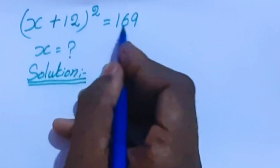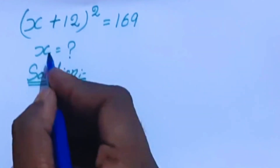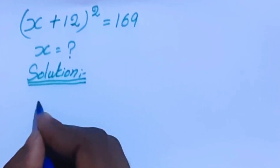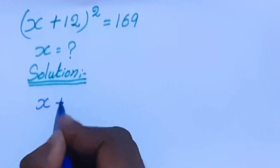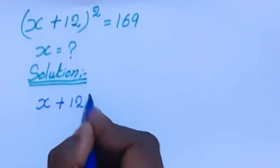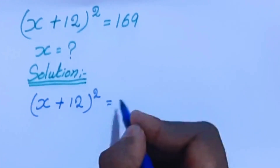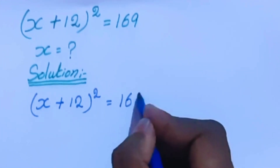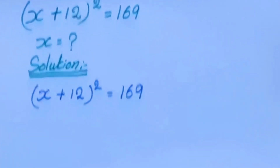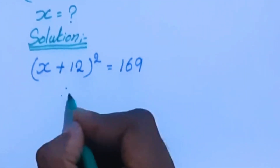Hello viewers, welcome to the channel. Today we are going to solve this problem to find the x value solution: x plus 12 whole power 2 equal to 169. Now we are going to apply this algebra formula.